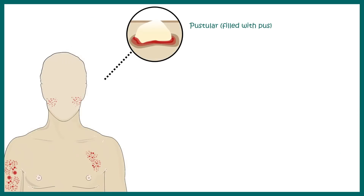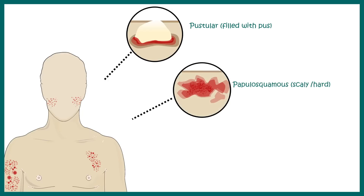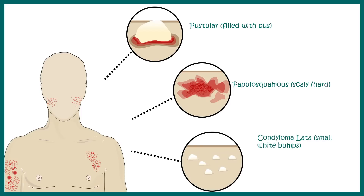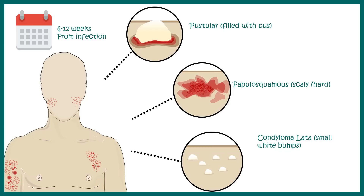Treponema attaches to capillary endothelial cell surfaces and infects them, resulting in rashes all around the body. This is known as maculopapular rash, which is generally not itchy but reddish in appearance. There are different types of rashes: some are pustular (filled with pus), some are papulosquamous (scaly or hard), and some are condyloma lata (small whitish bumps on the skin). These rashes are visible during secondary syphilis, which generally occurs 6 to 12 weeks from infection. This stage is highly infectious — even touching these rashes can transmit the organism.